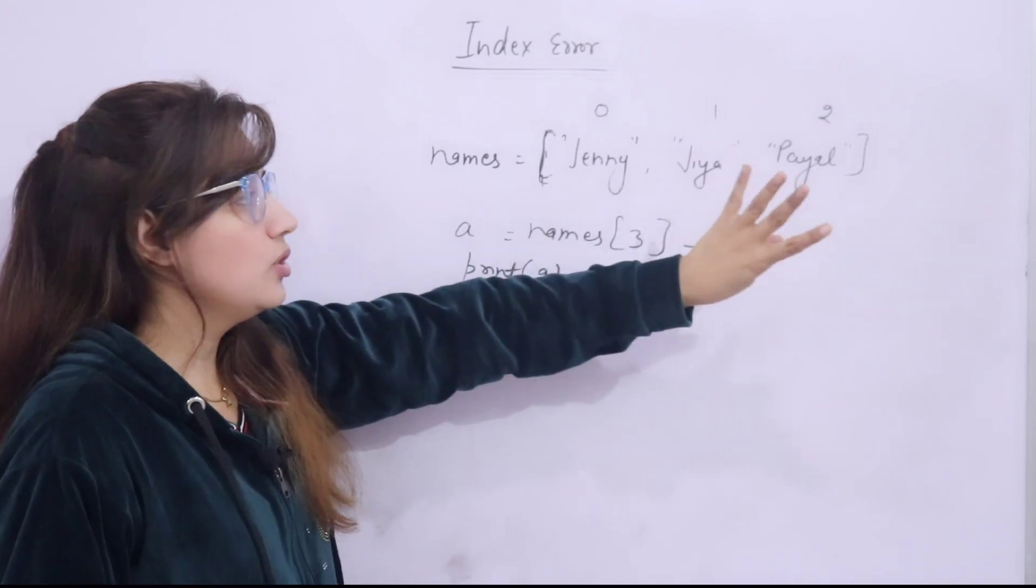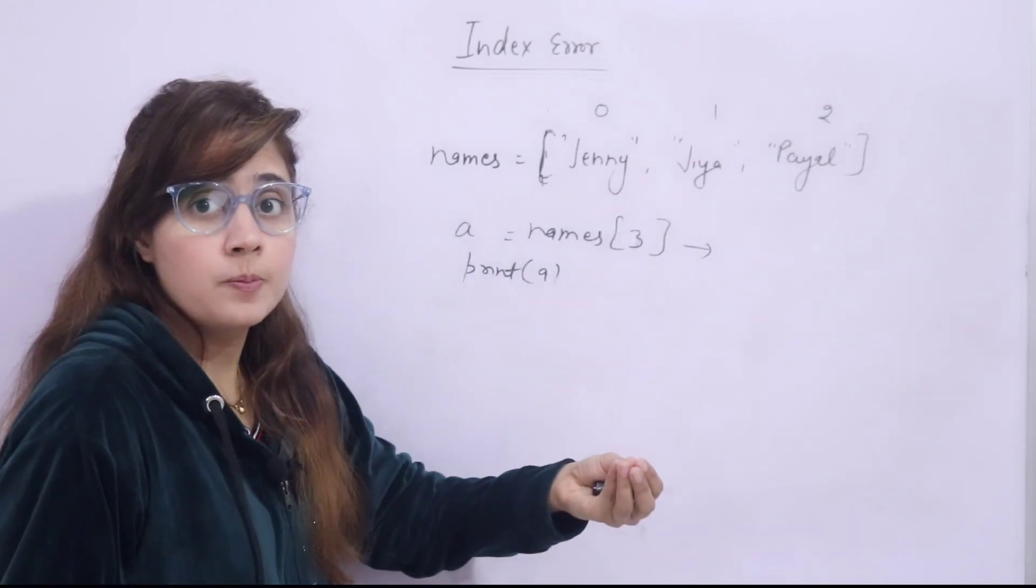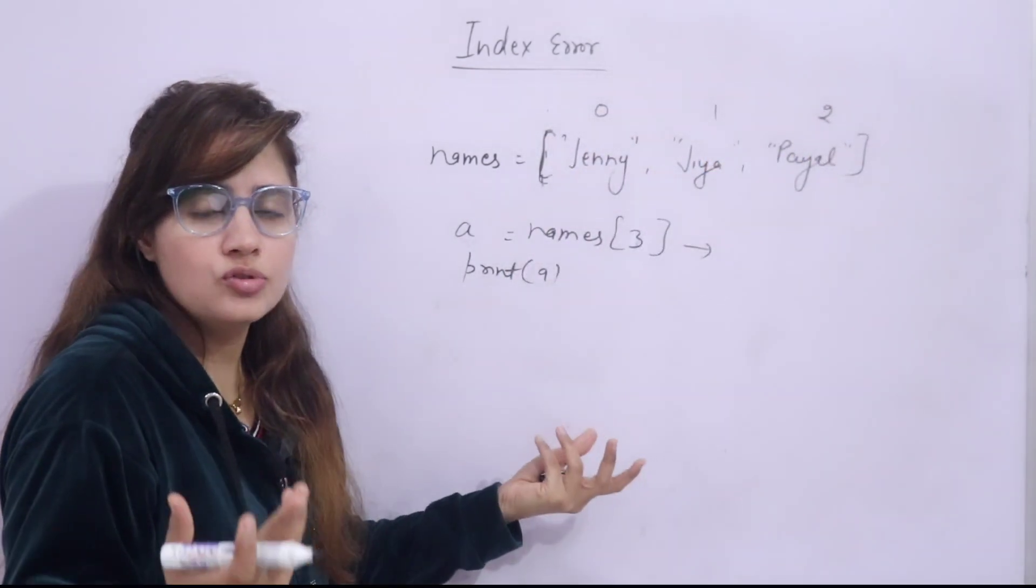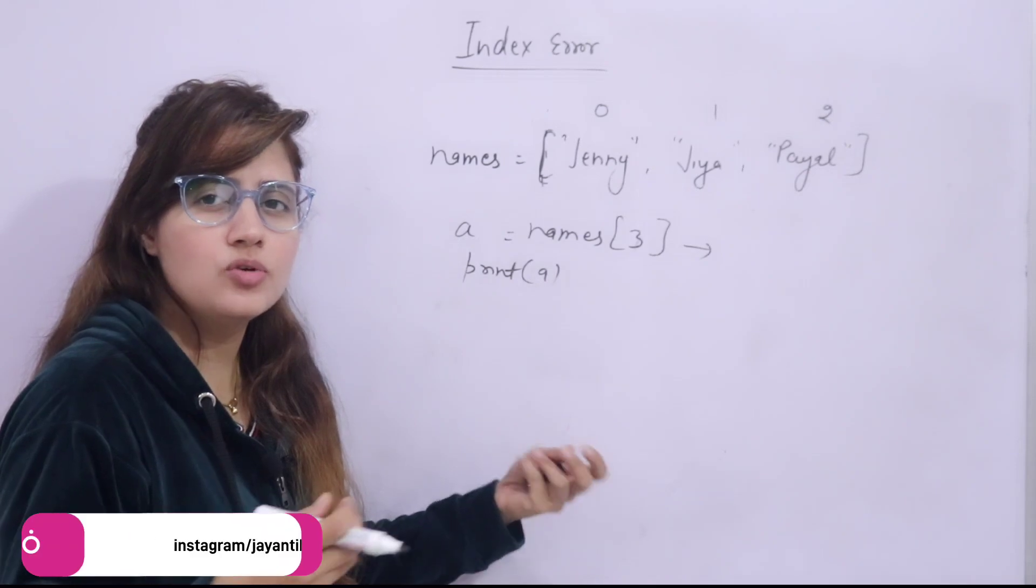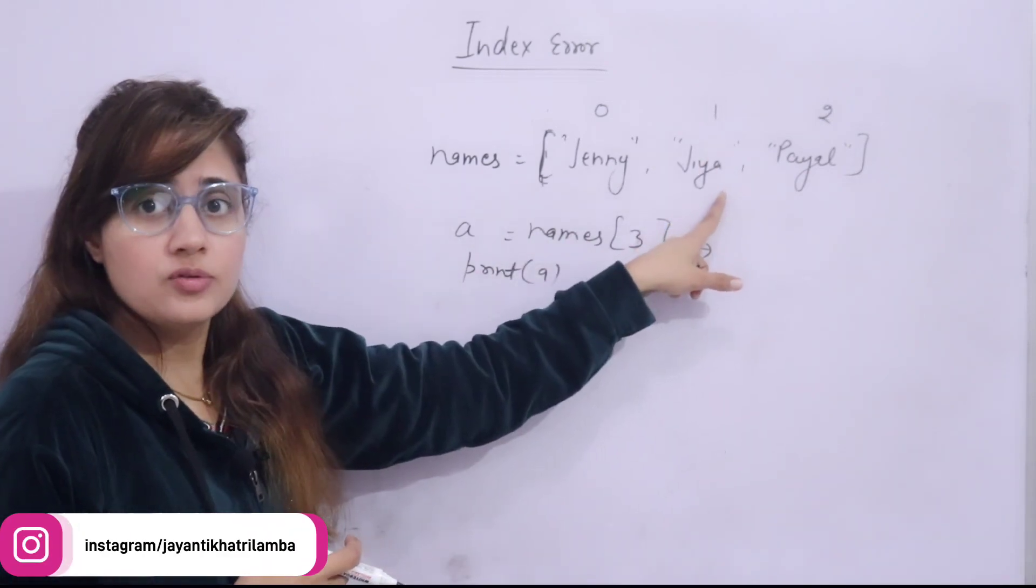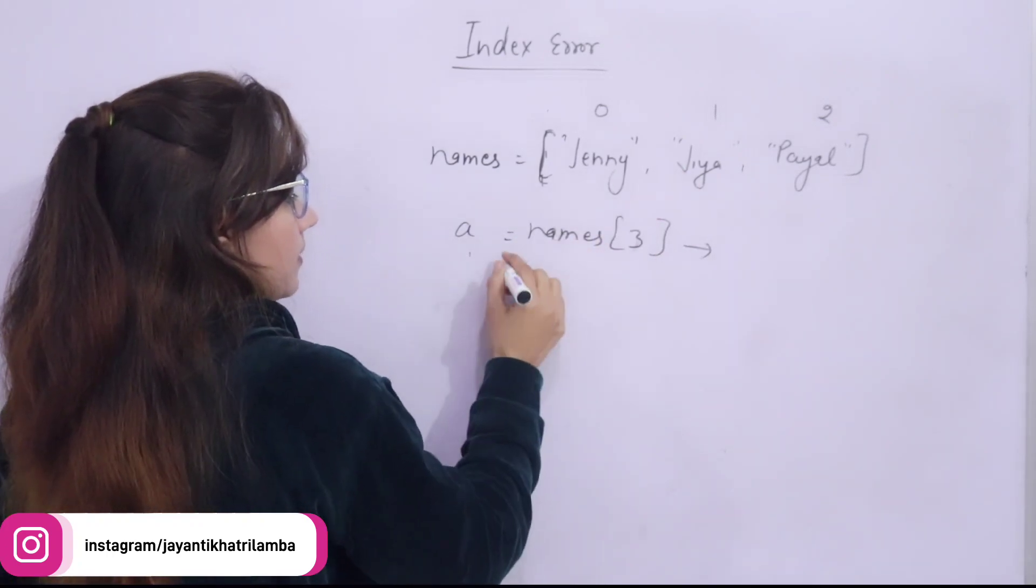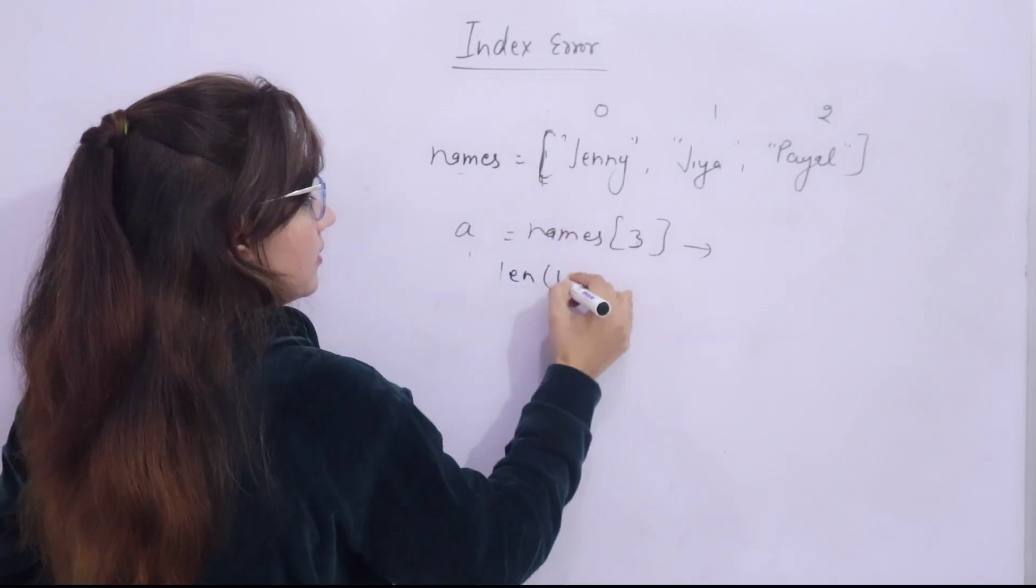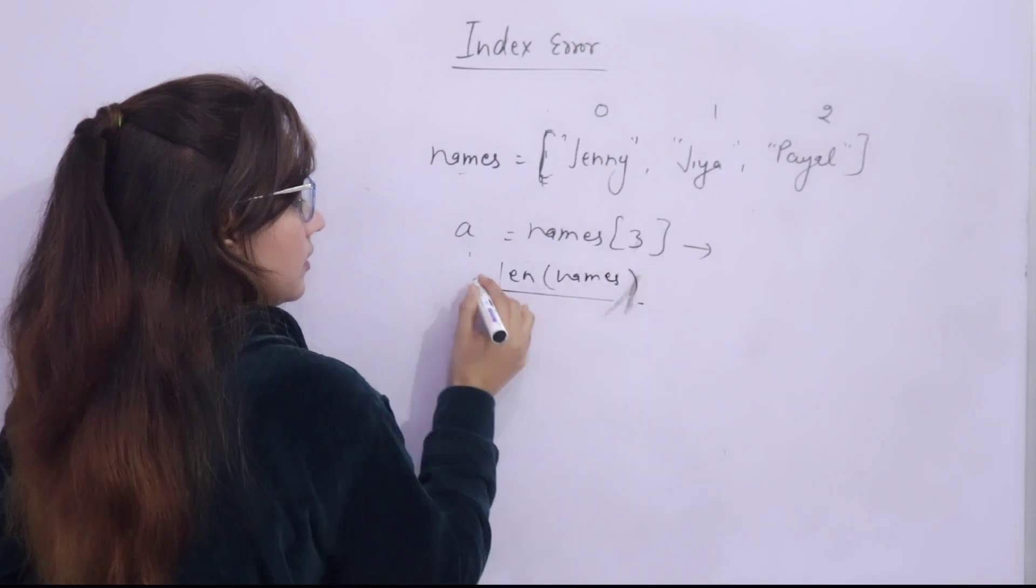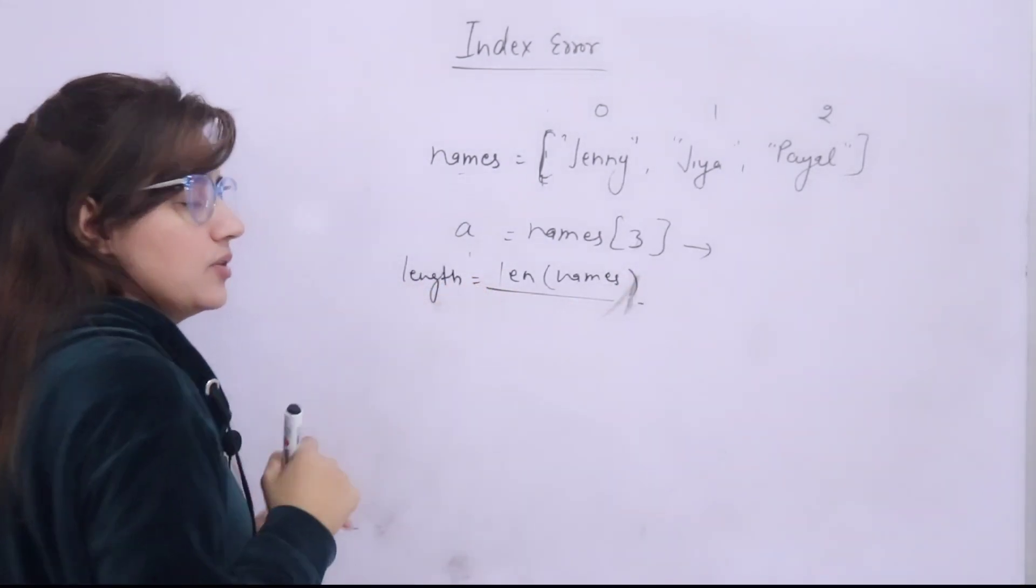See here, the list is having only 3 items. But suppose list is having 60 items, 100 items. Then obviously we will not count like 0, 1, 2, 3, index, something like this. So, you know, one simple logic is you can find out the length of the list. Here, if I want to find out the length of the list, then the function is simply len and just pass names. So this will give the length of the list. And we can store this in a variable like length.